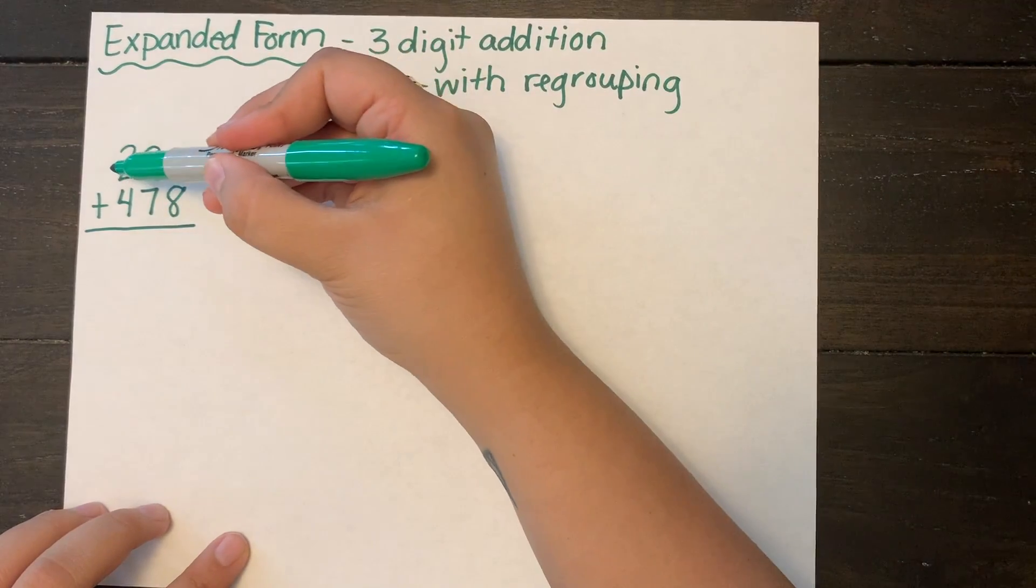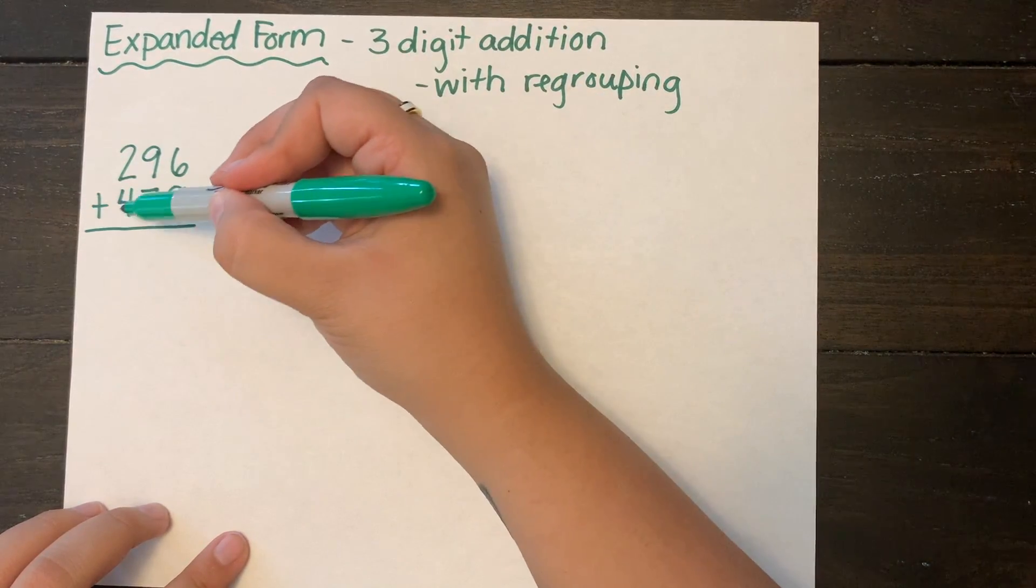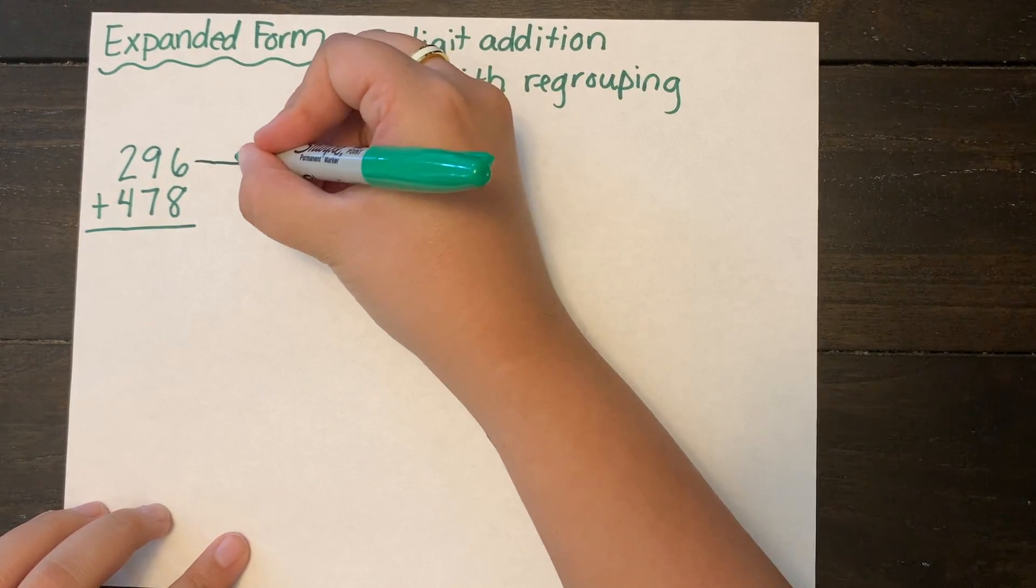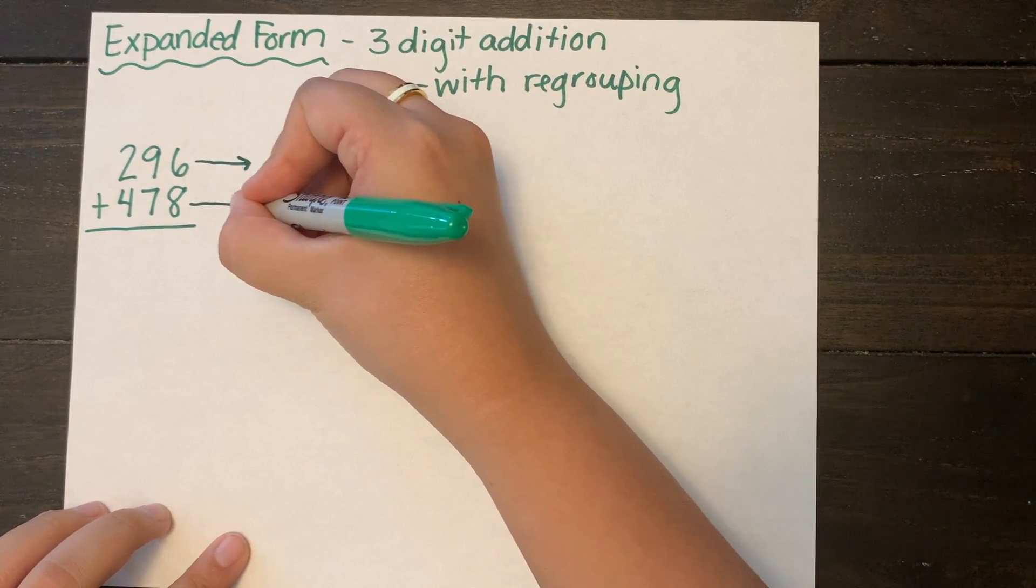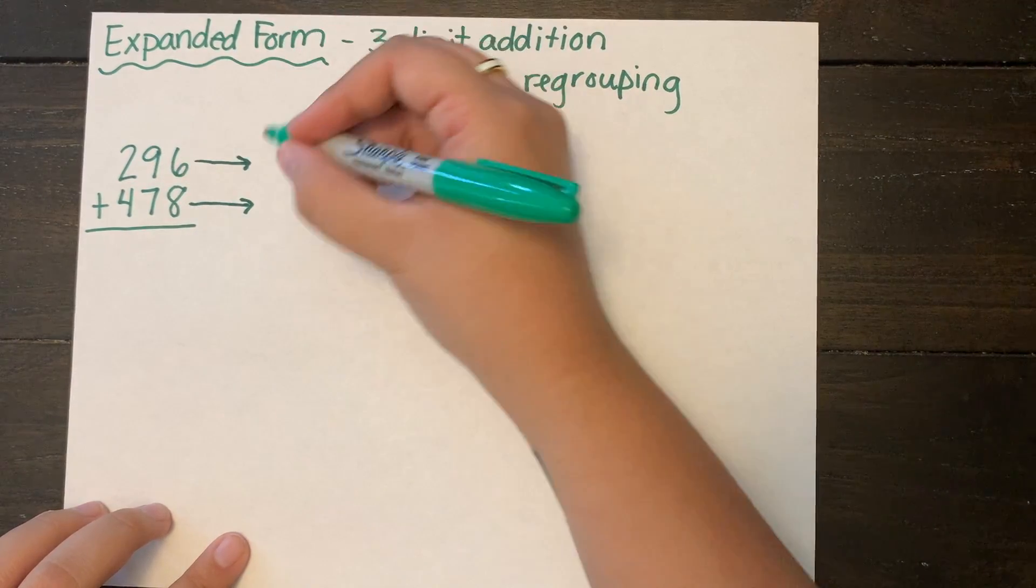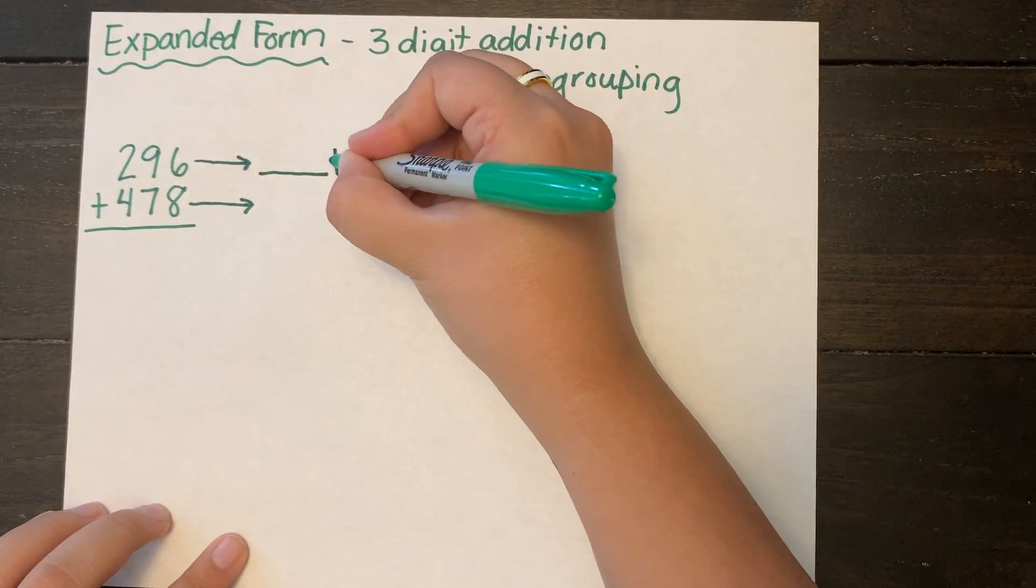So today we're going to be adding 296 plus 478. We're going to start off by drawing our arrows so that we know where we're going to expand our numbers out to. And because this has three digits, I'm going to be drawing three lines with plus signs in the middle.